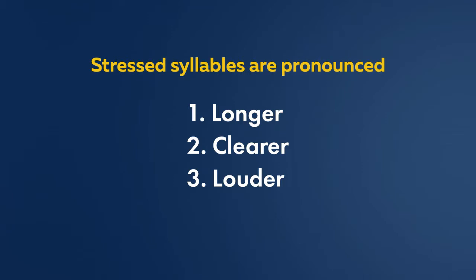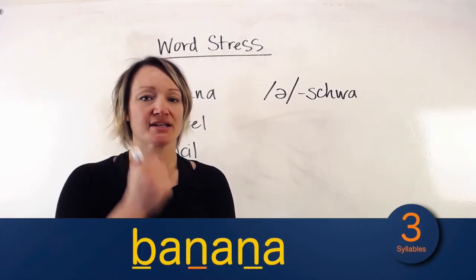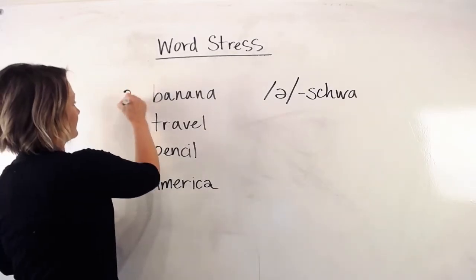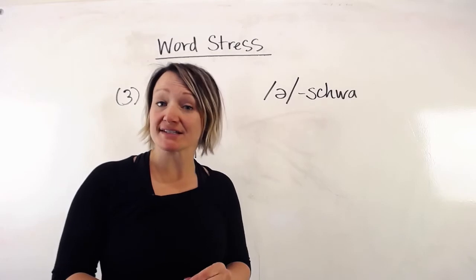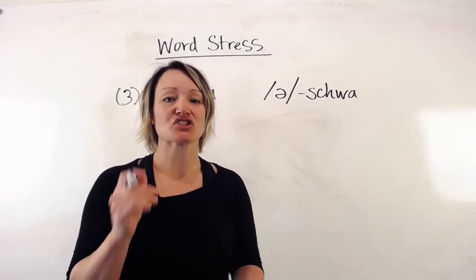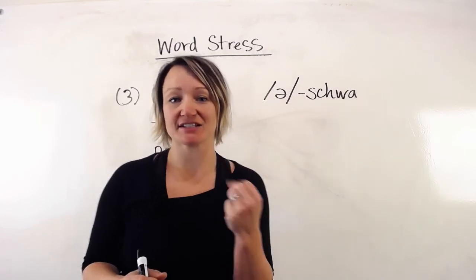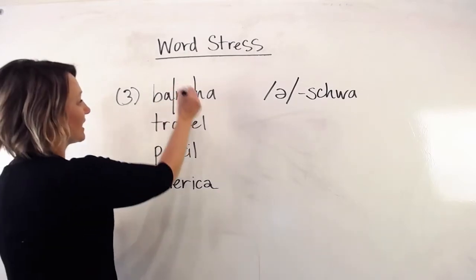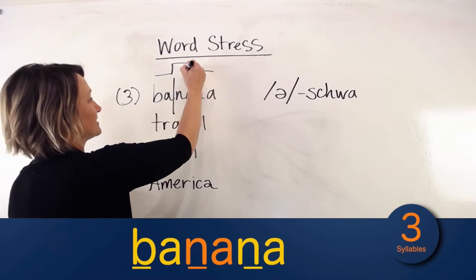The way that we stress syllables, we say them longer, clearer, and louder. Take 'banana' — three syllables. Now let's decide where the stress is. Where is it strongest? Banana. It's in that second syllable. If we separate it like this: ba-NA-na, we're stressing the middle syllable.